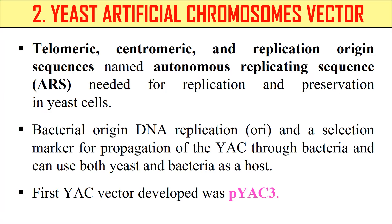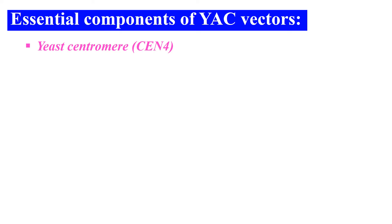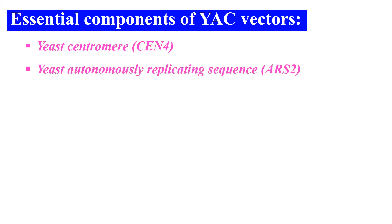The next example of artificial chromosome is the Yeast Artificial Chromosome (YAC). It is an artificially constructed chromosome containing telomeric sequence, centromeric sequence, replication origin sequence, and autonomously replicating sequences — all required for its replication. The first YAC vector developed was pYAC3. The essential components of a YAC vector include: the centromeric sequence CEN4, which is generally 125 base pairs long, and the ARS2 sequence — the autonomously replicating sequence — which is essential for replication in the yeast cell.